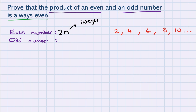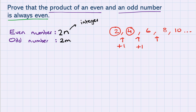How about the odd numbers then — how are we going to represent those? Well, if you think about it, the odd numbers just slot in between the even numbers. So if we take an even number and add 1, we're going to get an odd number, and that's going to be the same for all of them. So let's take an even number — I'm going to write 2m — and let's just add 1.